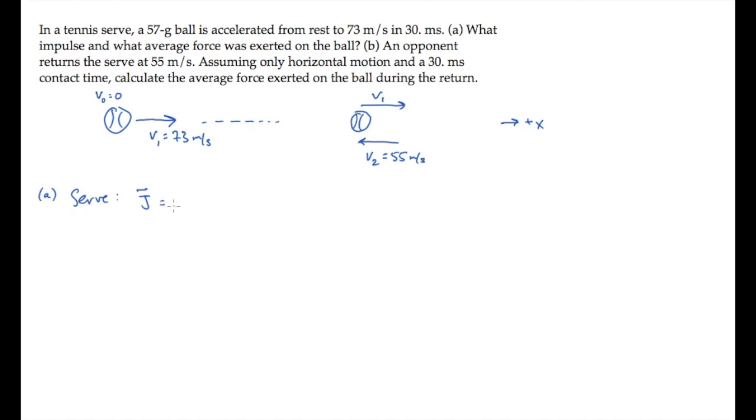The impulse, capital J, is a vector equal to the change in momentum, which is also the average force multiplied by the time duration, delta t.